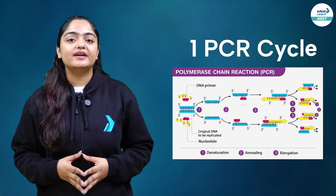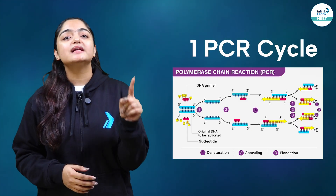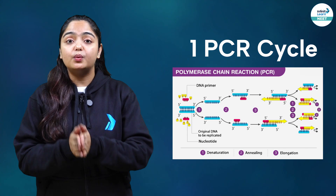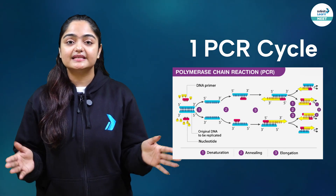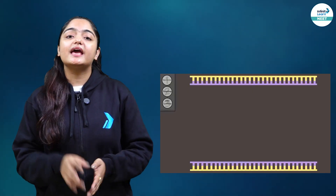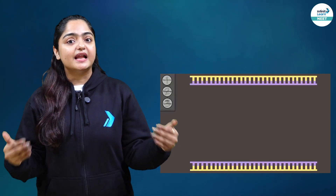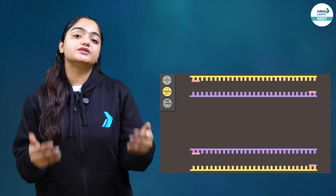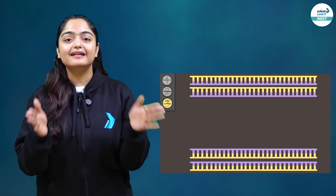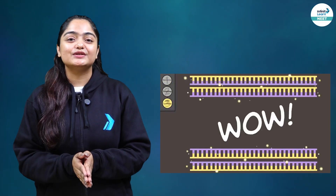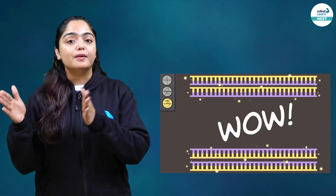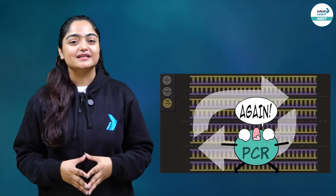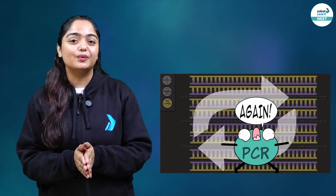Once all three steps are done, one cycle of PCR is completed. After one cycle of PCR is completed, you get two strands of DNA. Now it depends on how many more copies of DNA you require, and on that basis you can perform as many cycles of PCR as you want. That is how the PCR works.